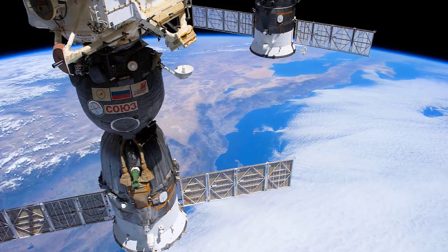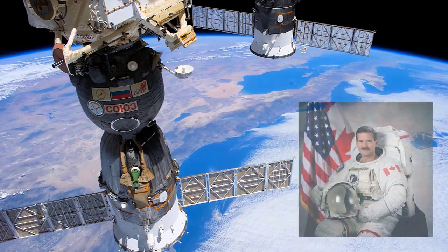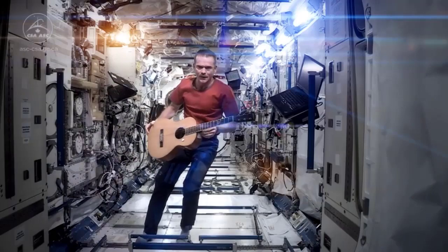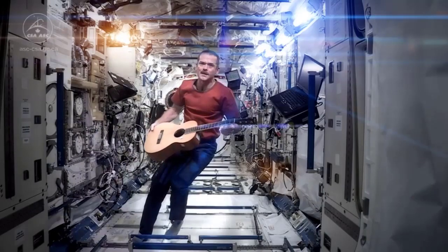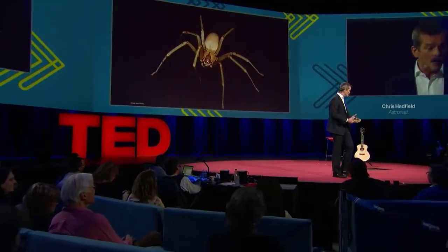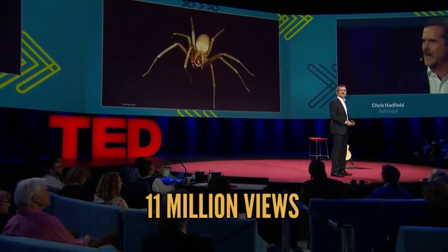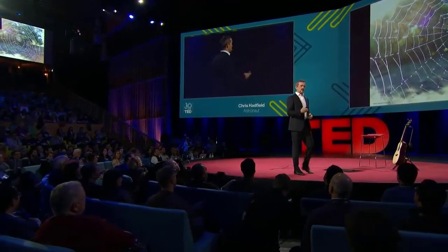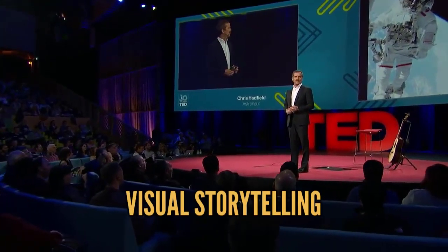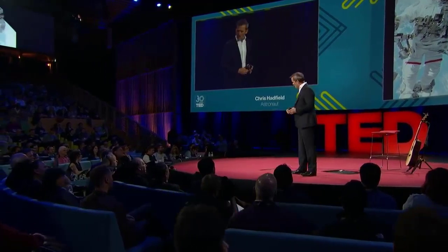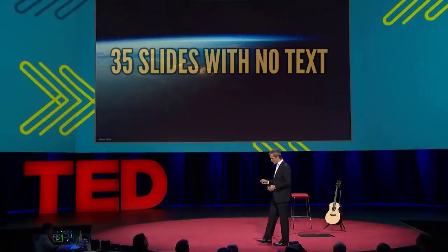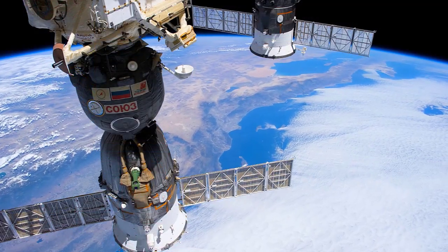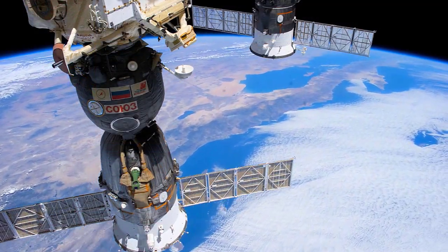Bad presenters use text to remember what they have to say next. Great presenters use pictures or video to bring life to their thoughts and ideas. While serving as commander of the International Space Station, Chris Hadfield became a social media sensation. Back on Earth, his celebrated TED talk has attracted more than 11 million views. Hadfield's presentation, 'What I Learned from Going Blind in Space,' was an astonishing display of visual storytelling. His PowerPoint deck contained 35 slides with no text — instead, he relied on pictures, images, animations, and videos.